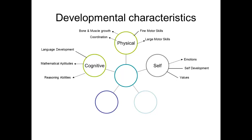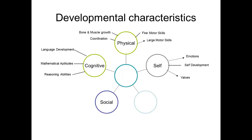Both self-development and emotional development are linked with our values. Values are also linked with our social development, which includes our relationship with our family, our peers, and our school. Children often tend to relate to all three in different ways. Have you ever heard of someone saying a child is very cooperative with the teacher but totally obnoxious at home? Or that they're very easy to get along with in their peer group, but they have a hard time getting along with siblings?